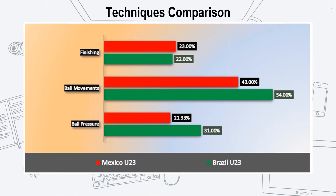Here we have the techniques comparison, categorized into three simplest forms of understanding on the field — we can call it finishing, ball movements, and ball pressure. This is the aspect of understanding the strength of a team on how they can freely score and make all chances counted.